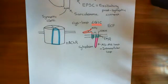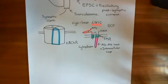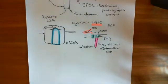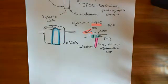Welcome back to this next video in which we are discussing slow channel myasthenic syndrome. I've reminded you now of the structure of the neuromuscular junction, where we have alpha motor neurons synapsing onto skeletal muscle fibers.